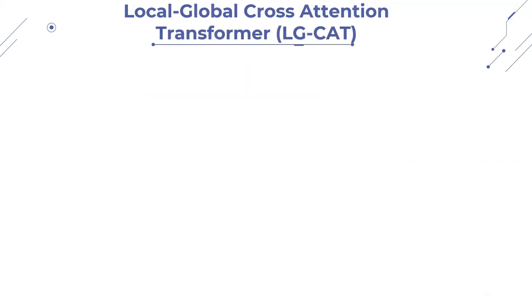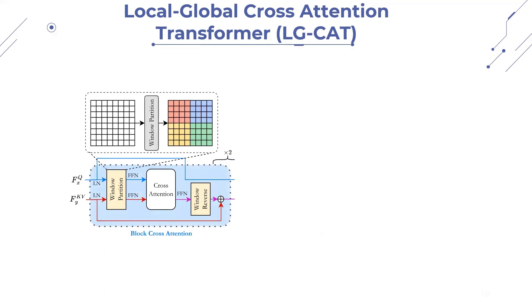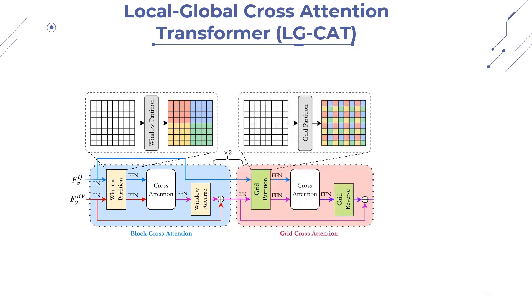In our proposed local global cross-attention transformer, in short, LGCAT, firstly, features are partitioned into local dense windows by block cross-attention, enabling local symbiotic enrichment. Then grid cross-attention partitions the resultant features into global sparse windows, facilitating global information sharing beyond limited receptive fields. Finally, fused feed-forward enables inter-channel interaction while maintaining important properties.